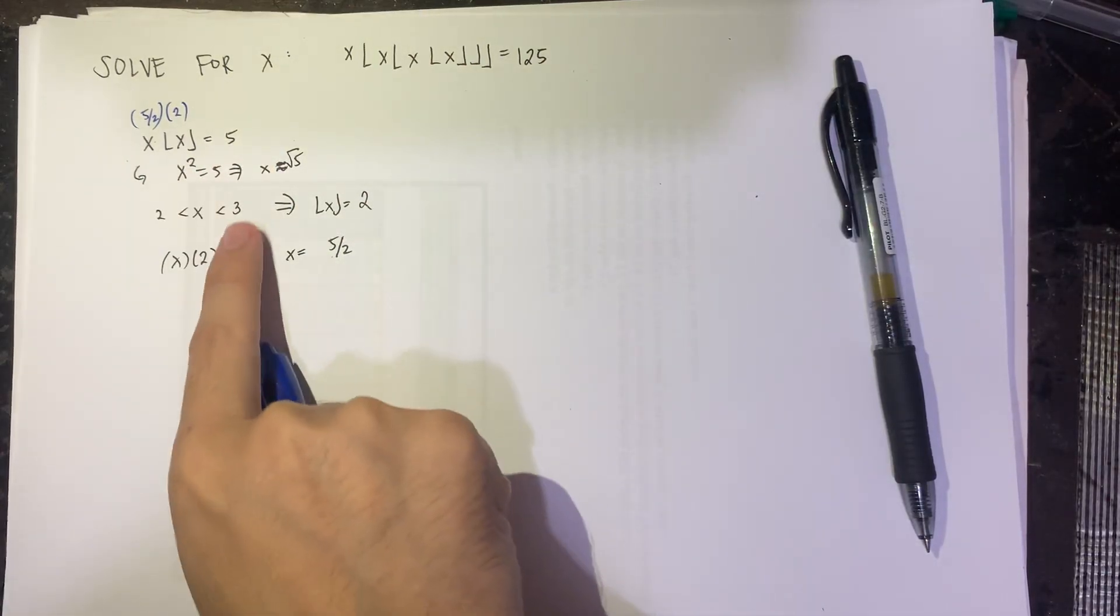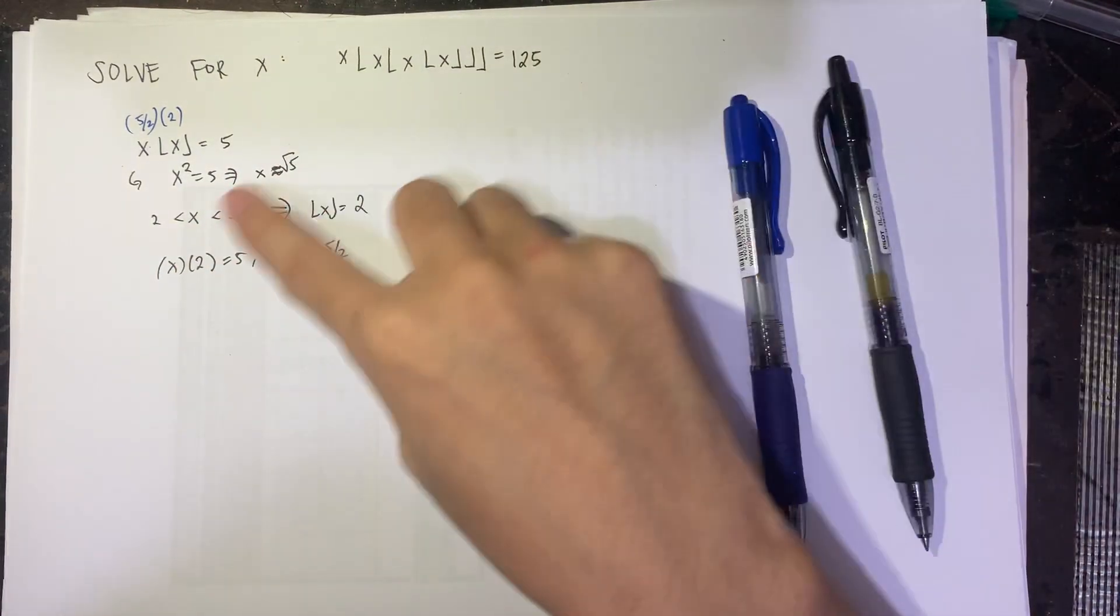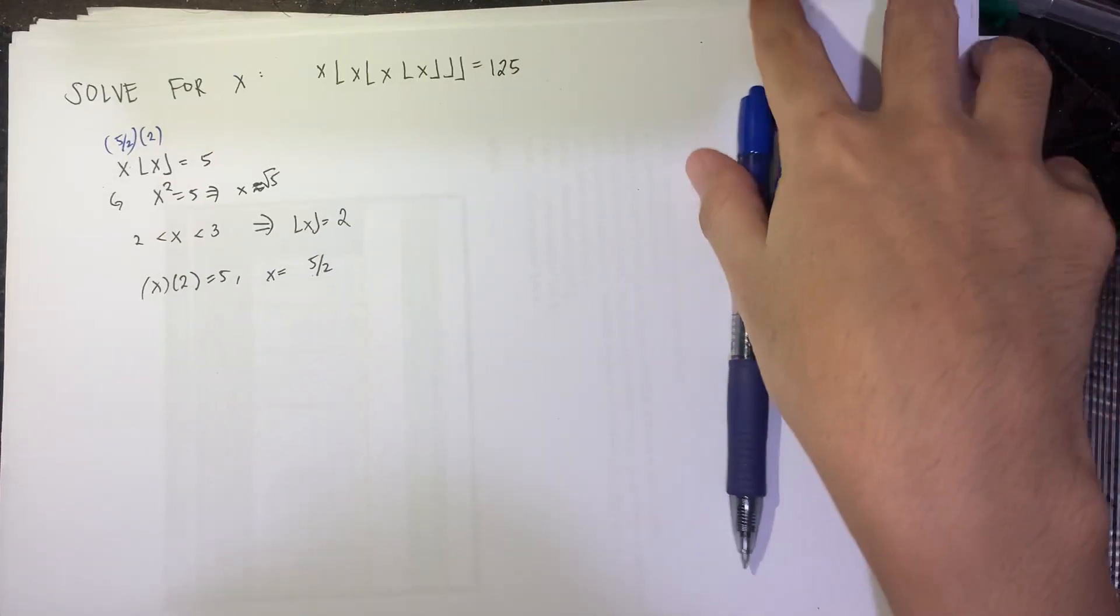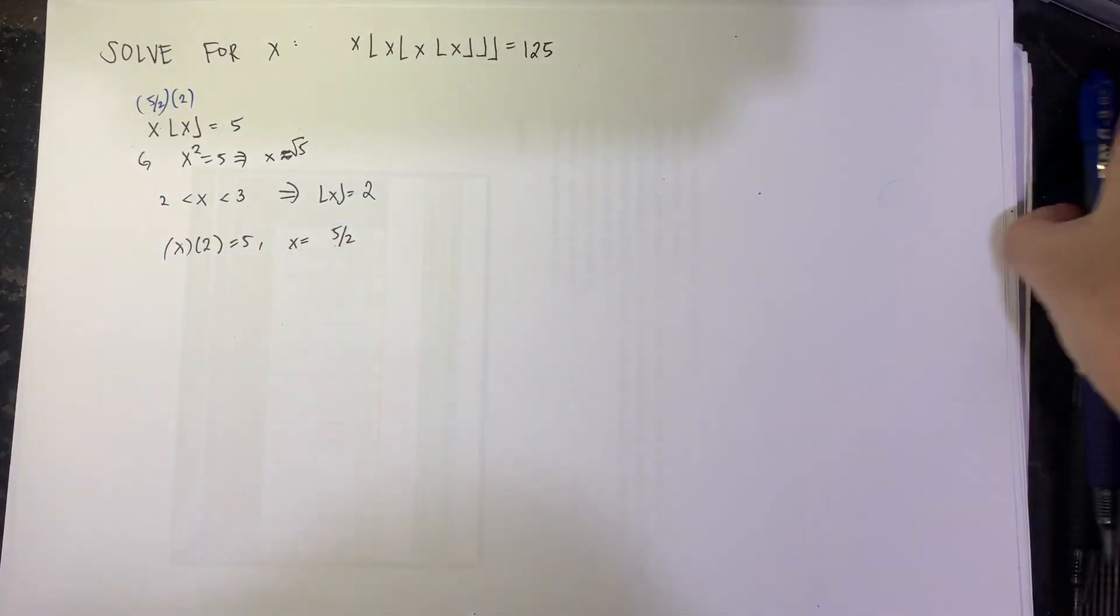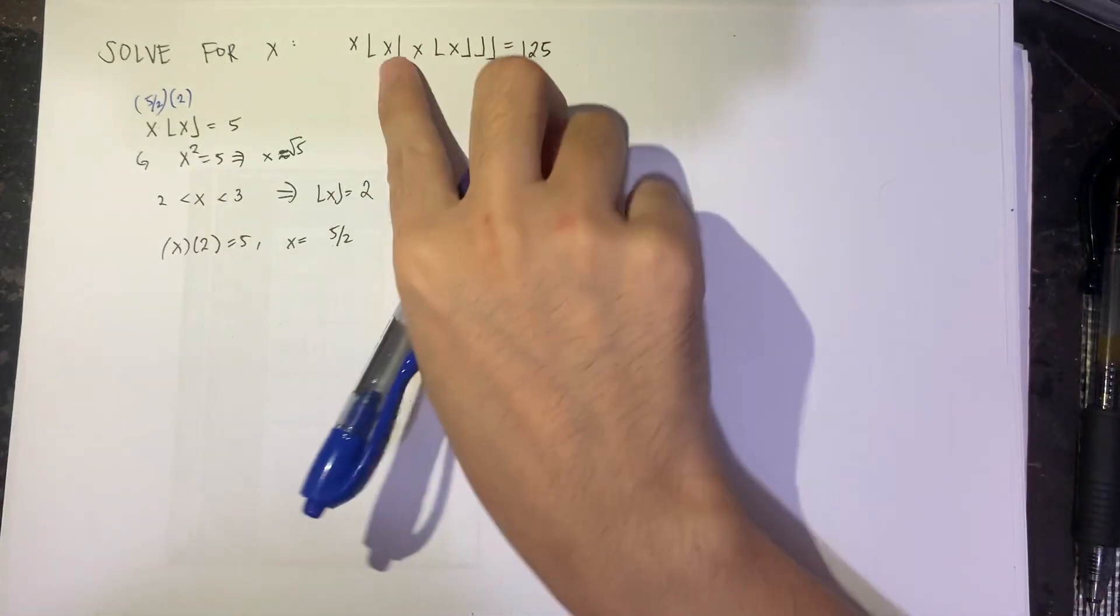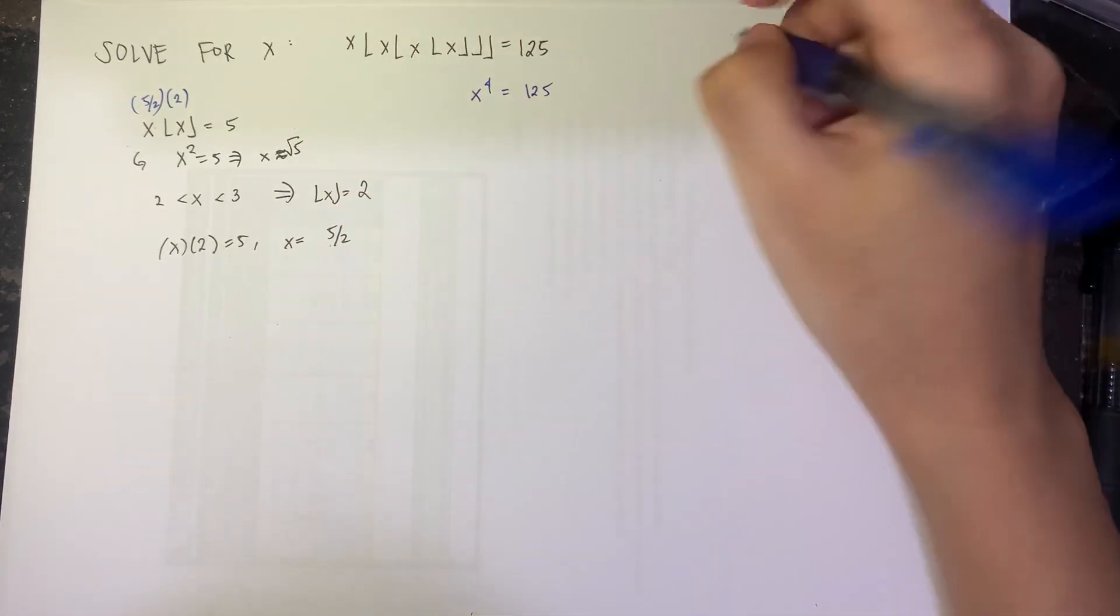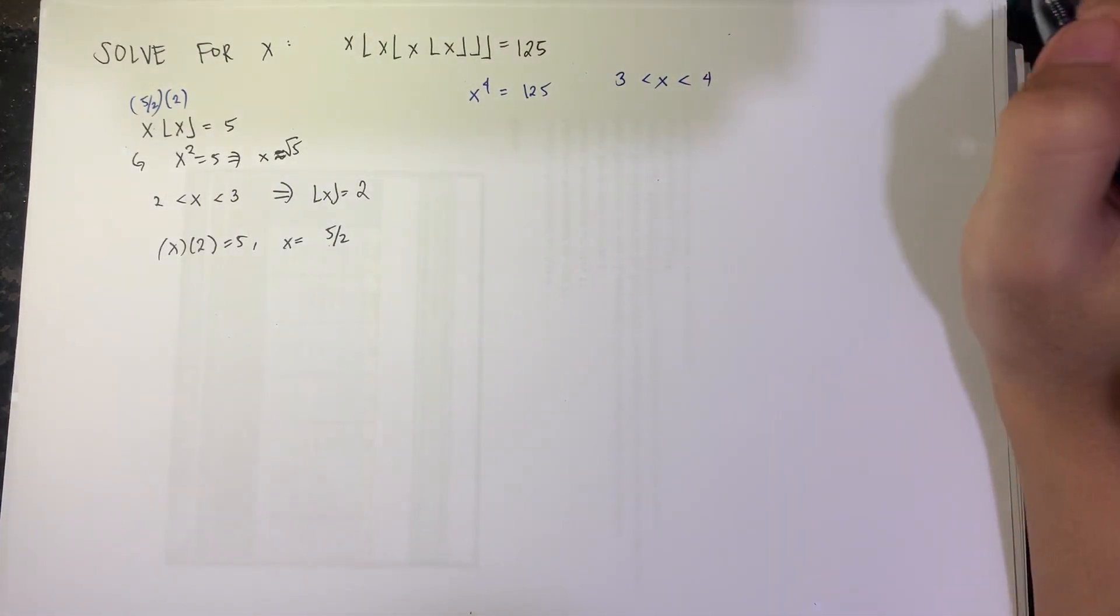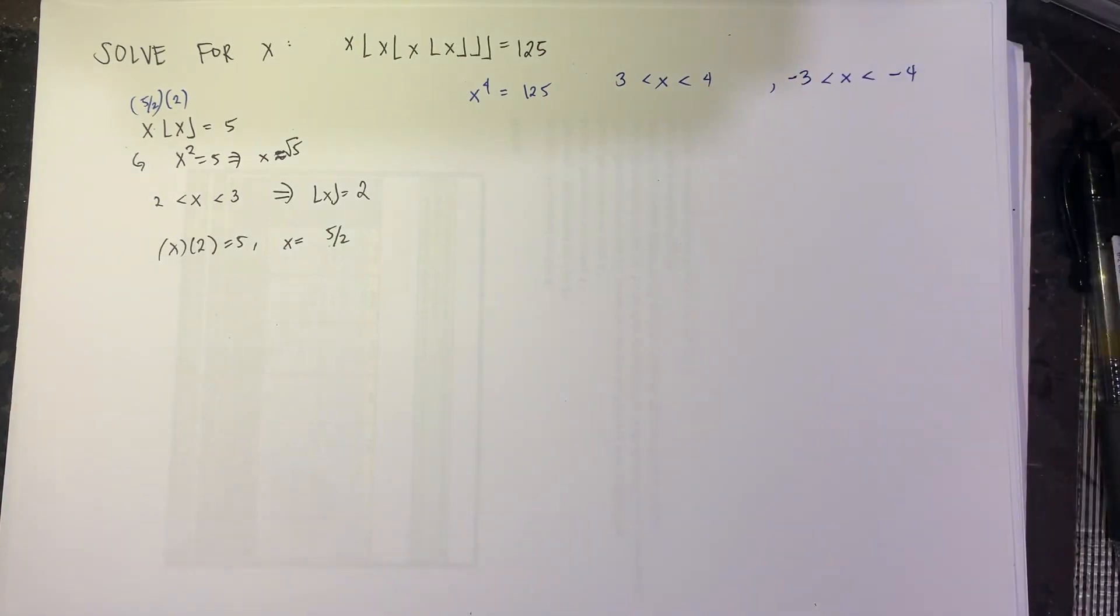Actually, for this one, you can also try for the value where x is negative and it's between negative 3 and negative 2. But I leave that up to you. I'll just use that as an example. And for this problem, we also try to do the same. Let's suppose x is an integer to start to make an initial estimate. So this gives you, since there are 4 x, x to the 4th is equal to 125. So this means that x must be between 3 and 4. Why?